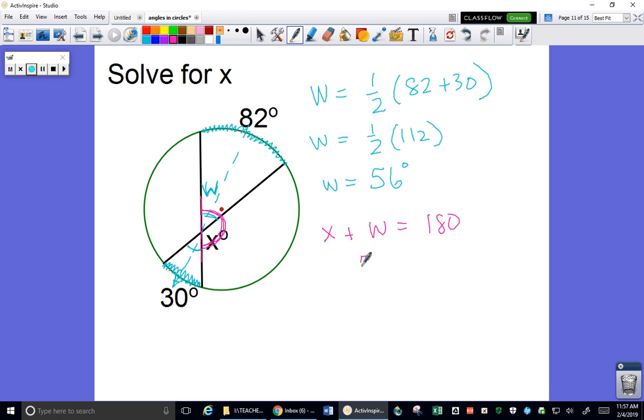So if we know that this angle is 56, we can solve this equation real quick and get that the value of x is going to be 124 degrees, not 56. Make sure you're solving for the angle that is lined up with your two intercepted arcs.